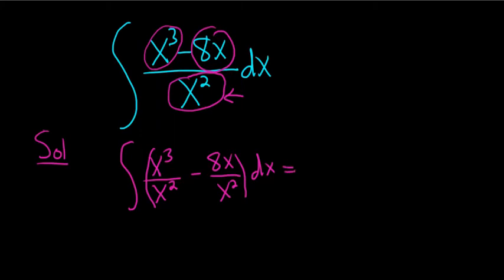This is equal to, let's see, x squared over x cubed. That's just x. And here, one of the x's cancels, so you get minus 8 over x dx.